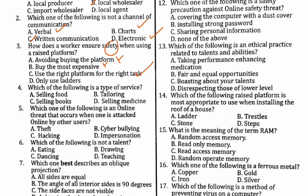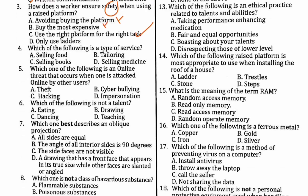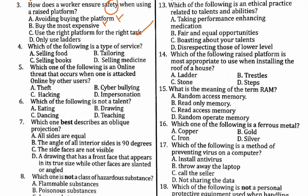Number four: each of the following is a type of service. Remember, a service is an intangible activity which you cannot touch. So selling food is not a service — you are selling goods. Selling books is not a service. Tailoring is a service. Selling medicine is not a service. Therefore the correct option is B.